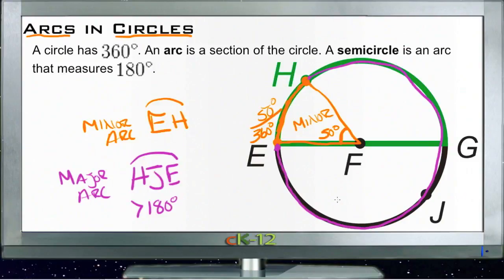So terms we're going to work with are: arc—section of a circle; a semicircle, which is 180 degrees, half of a circle;